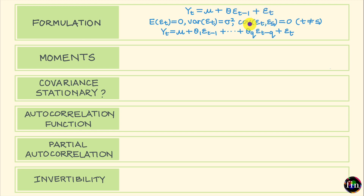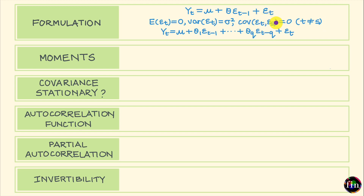I can think of these epsilons as essentially white noise, which means that their expected value is 0, their variance is a constant sigma squared, and these epsilons are serially uncorrelated, which means for any two periods T and S, the covariance of epsilon T and epsilon S will be equal to 0.